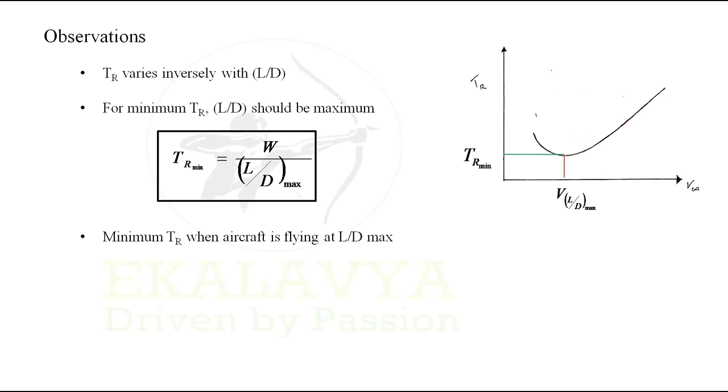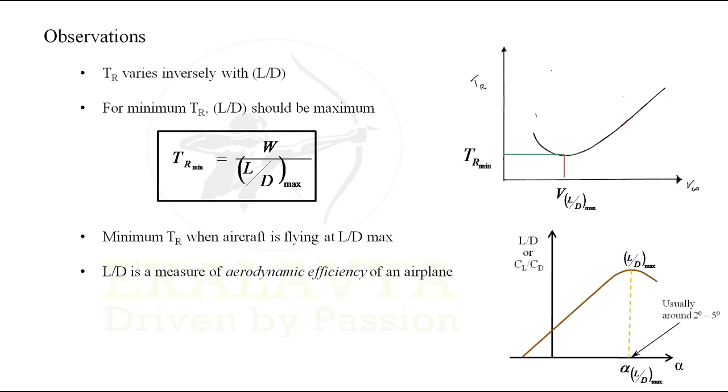Usually L by D max is achieved with angle of attacks ranging between 2 to 5 degrees. L by D is a measure of aerodynamic efficiency of an airplane, which implies maximum aerodynamic efficiency is achieved when thrust required is minimum.